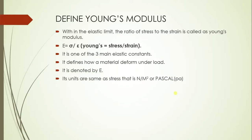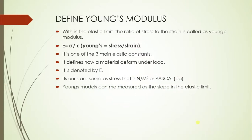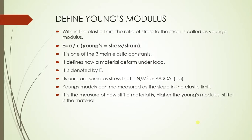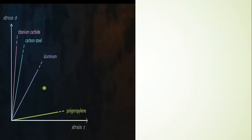Young's modulus is one of the three elastic constants. Its units are the same as stress — newton per meter squared or pascal — because strain is dimensionless. Young's modulus can be measured by the slope of the straight-line portion of the stress-strain curve.